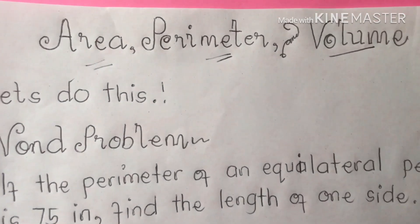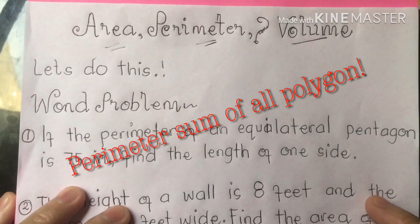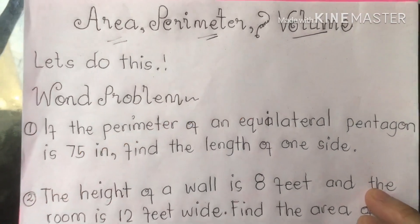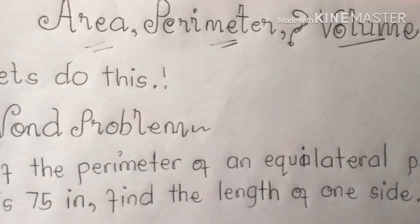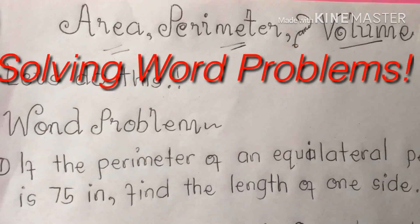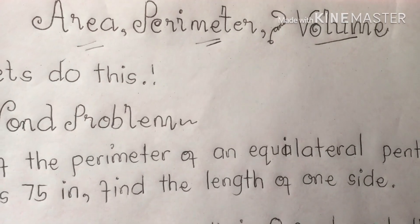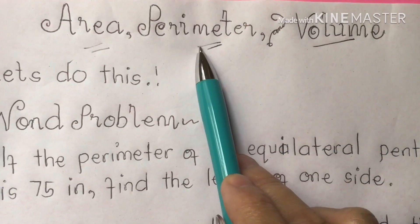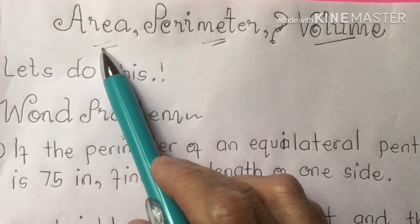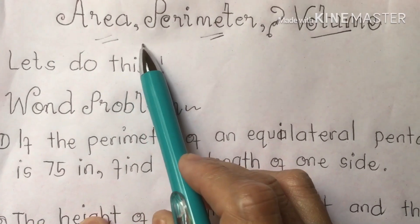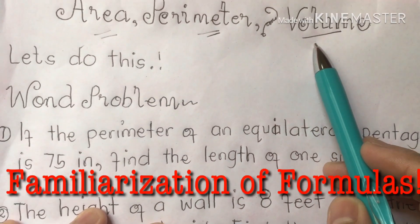Remember class, the perimeter of any polygon is the sum of the measurement of all its sides. For example, to find the perimeter of a rectangle, you only need to know the length of one side and the width. We're going to follow the formula by adding all the sides. For area, we find length times width, or L times W, and then there's the formula for getting the volume.